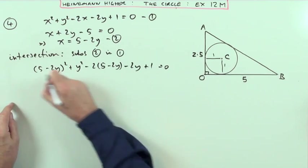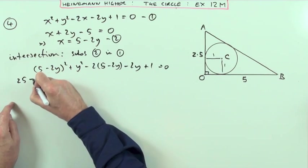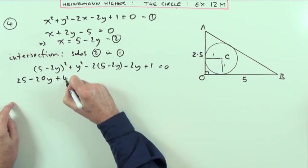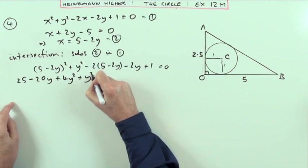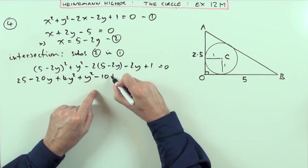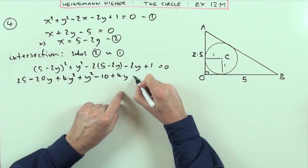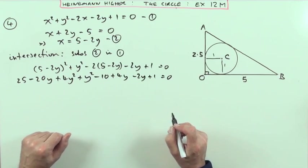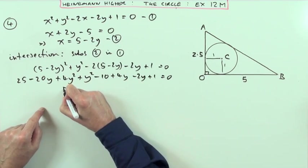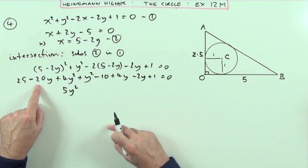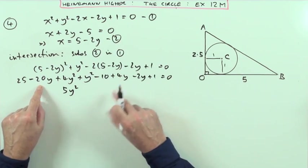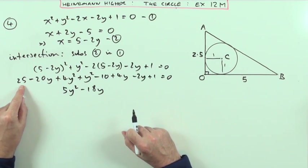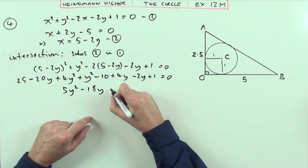In each case, x has been replaced by 5 minus 2y. Multiply that bracket: square the first, twice the product - product is 10 so double that is 20 minus 20y, square the last plus 4y². That's another y² term. Multiply this bracket: minus 10 but plus 4y minus 2y plus 1 equals 0. Gather it up to form the quadratic, and that's going to be 5y² minus 18y plus 16 equals 0.